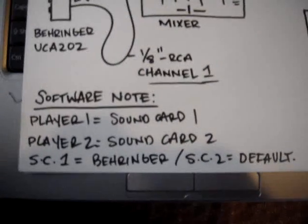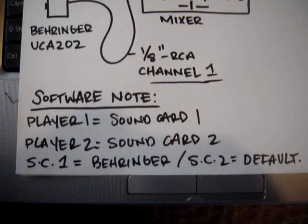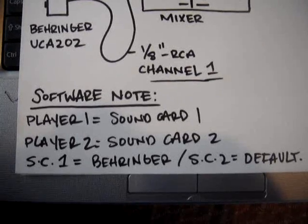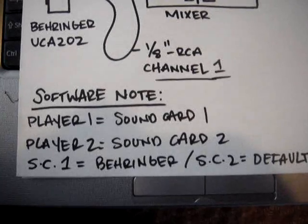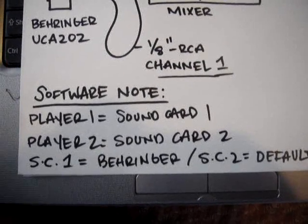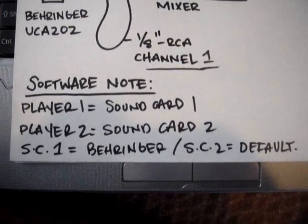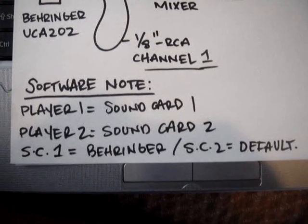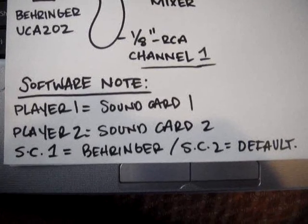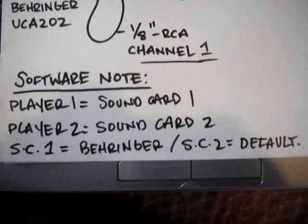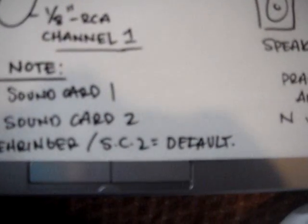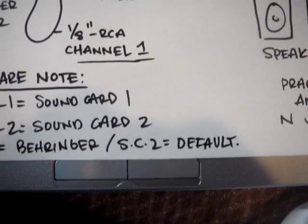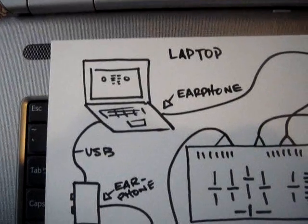On the software side, I use PC DJ Decks. PC DJ Decks gives you an option where you set Player 1 equal to Sound Card 1 and Player 2 equal to Sound Card 2. When you go into the configurations in PC DJ, you can identify each sound card. In the drop-down, Sound Card 1 is assigned to the Behringer UCA202, and Sound Card 2 is my default laptop sound card, which is the headphone jack.